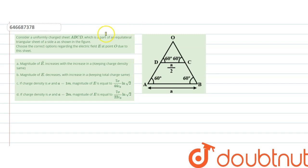In this question, we have to calculate the electric field at point O due to the given sheet. This sheet is a trapezium which is a part of a triangle.